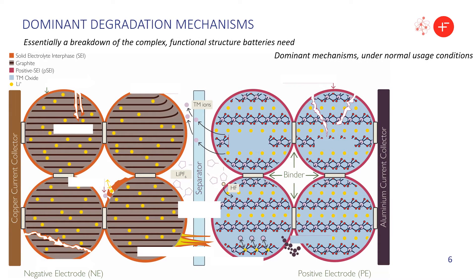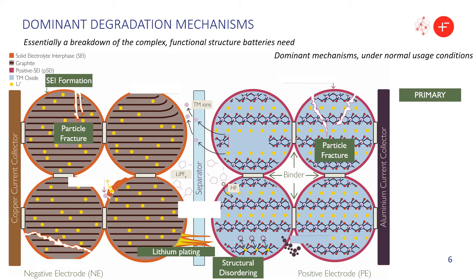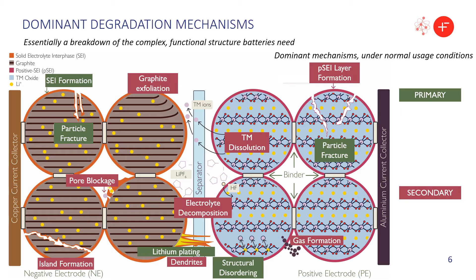Degradation mechanisms essentially break down the complex structure and disrupt its function. In this review, we produced updated graphics and explained in text only the main mechanisms occurring under normal operating conditions. We identified five primary mechanisms, which lead to 13 secondary mechanisms, all of which lead to consequences for the cell's behavior and a reduction in power and energy performance.